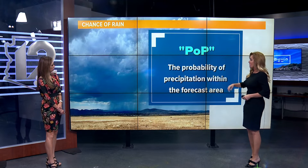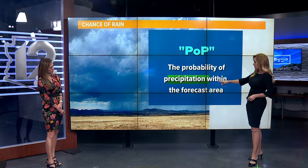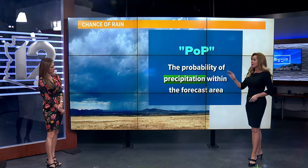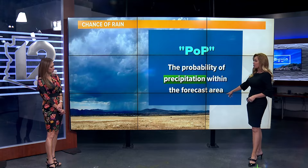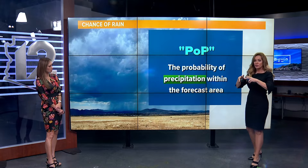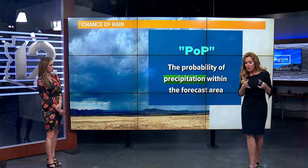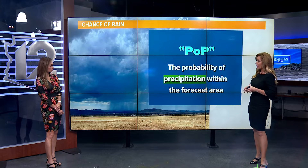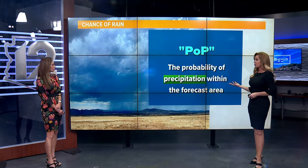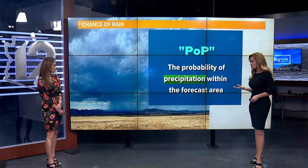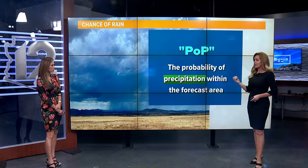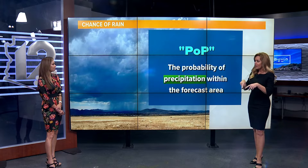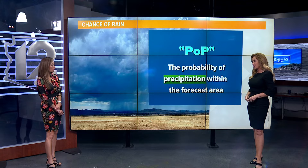In a meteorological sense, what we call it is a POP — the probability of precipitation, measurable precipitation, within the forecast area. So if you think of the entire state, or if we're just going to do a microclimate, let's say the Phoenix metro area, and we've got a 40% chance of rain — that means four out of ten times we had the exact same weather pattern, that region saw rain.